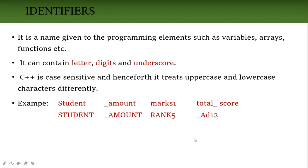By using letters, digits, and underscore, we can write any word and give any name as an identifier to a variable, array, and so on. Remember: it contains only letters, digits, and underscore, always starts with underscore or letter, and both uppercase and lowercase letters are treated as two different identifiers in C++.